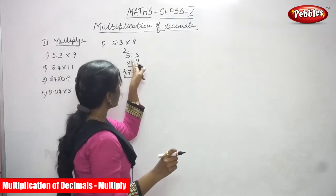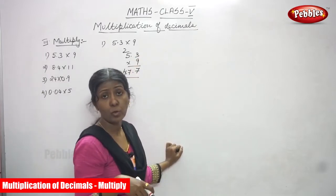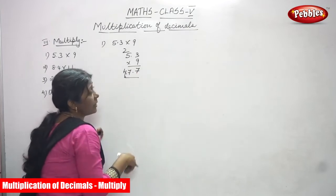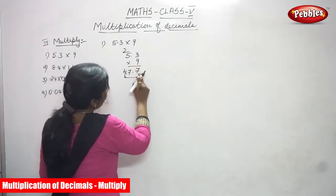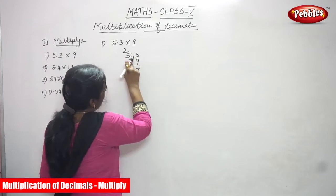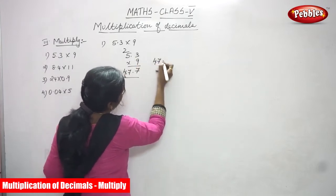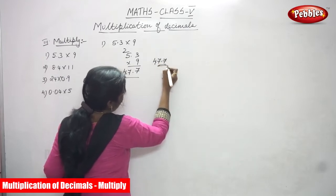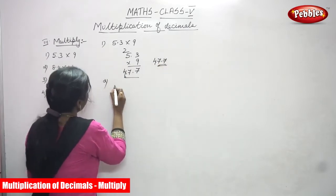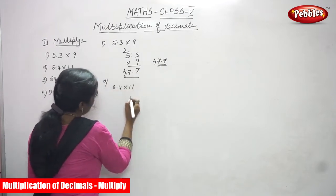After the point we call it the decimal part, and before the point we call it the whole part. So multiplying 5.3 into 9: 3 into 9 is 27, carry 2, then 9 fives are 45, plus 2 is 47. The answer is 47.7. Next question: 8.4 into 11.